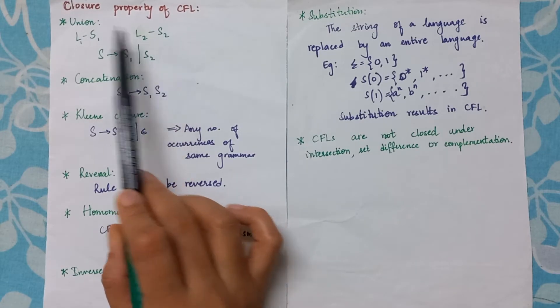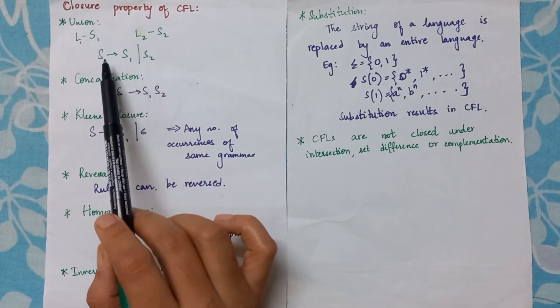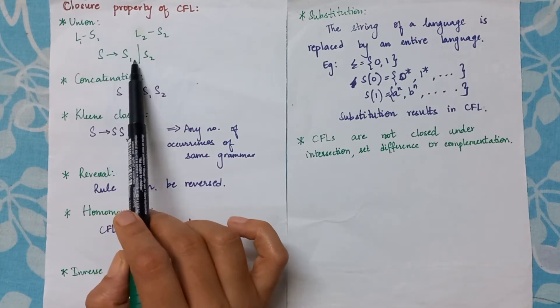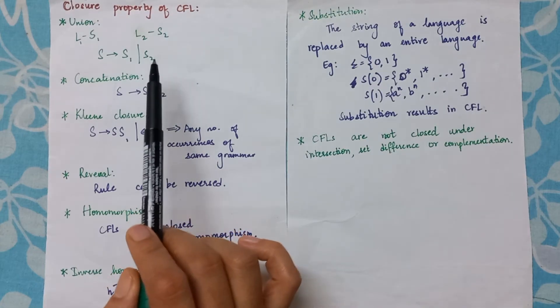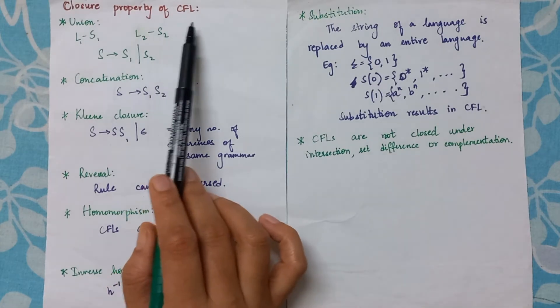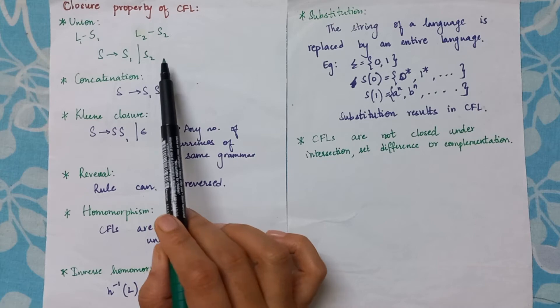Under union, I can write s gives either s1 or s2, so I say that CFLs are closed under union operation.